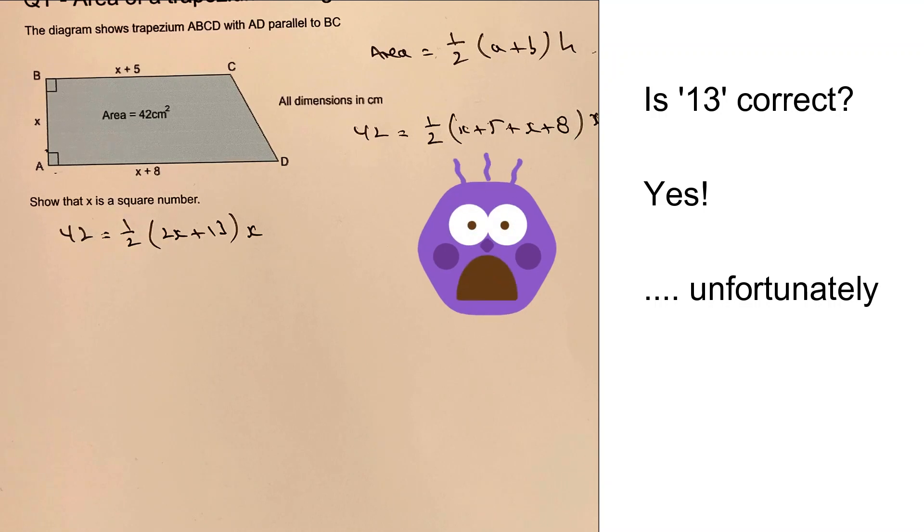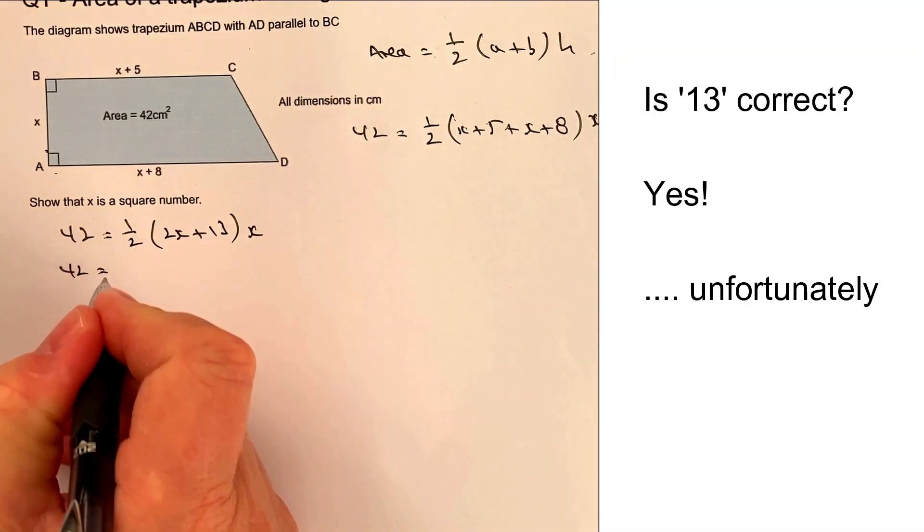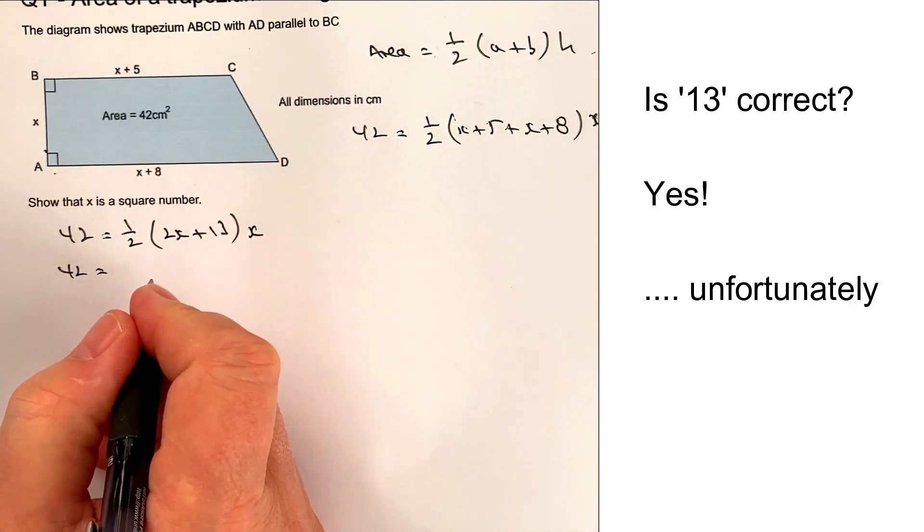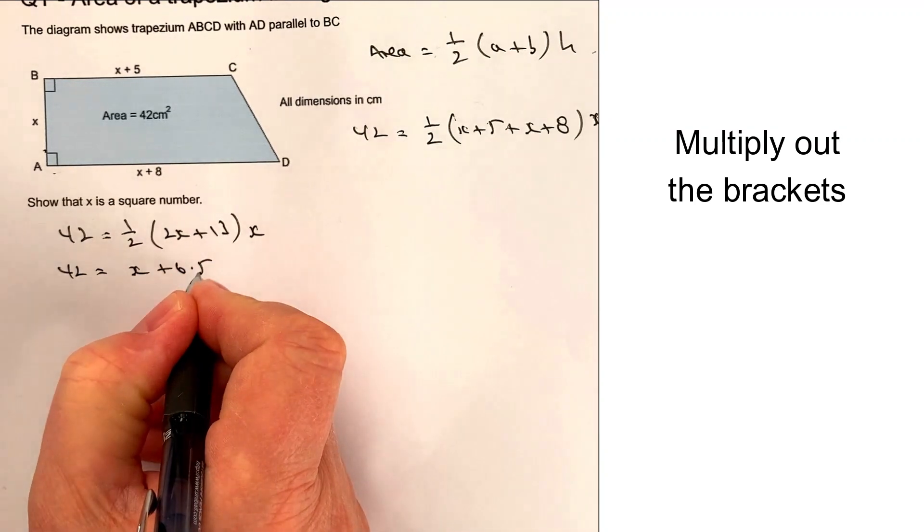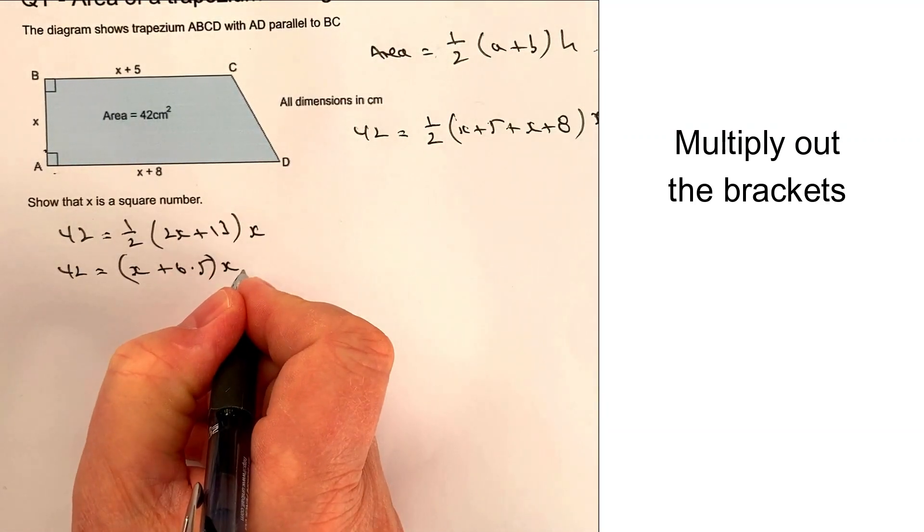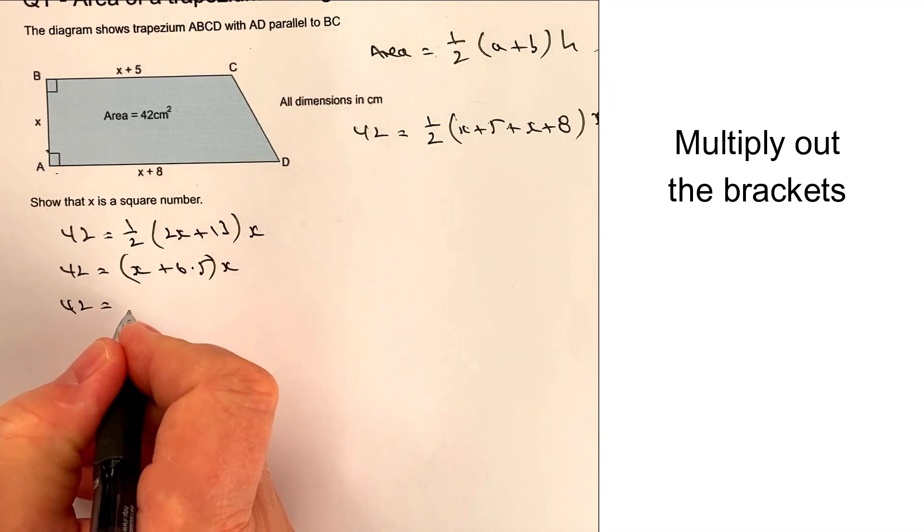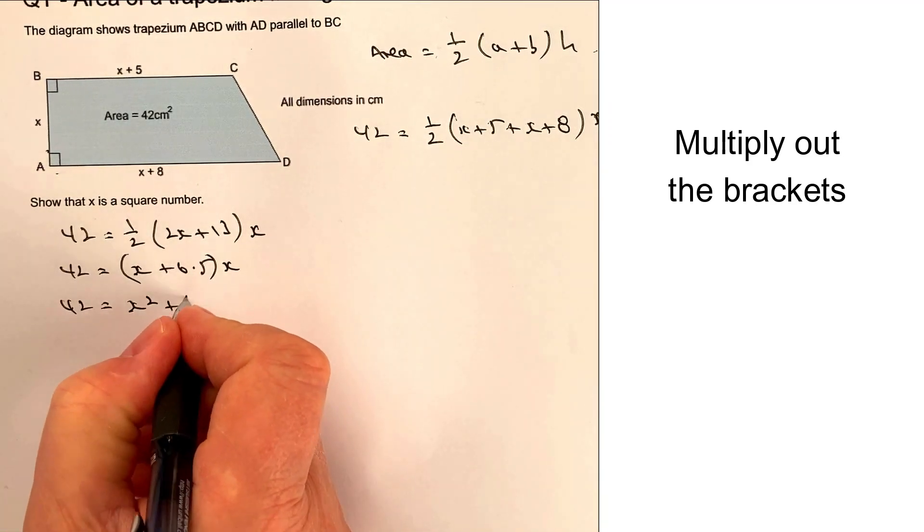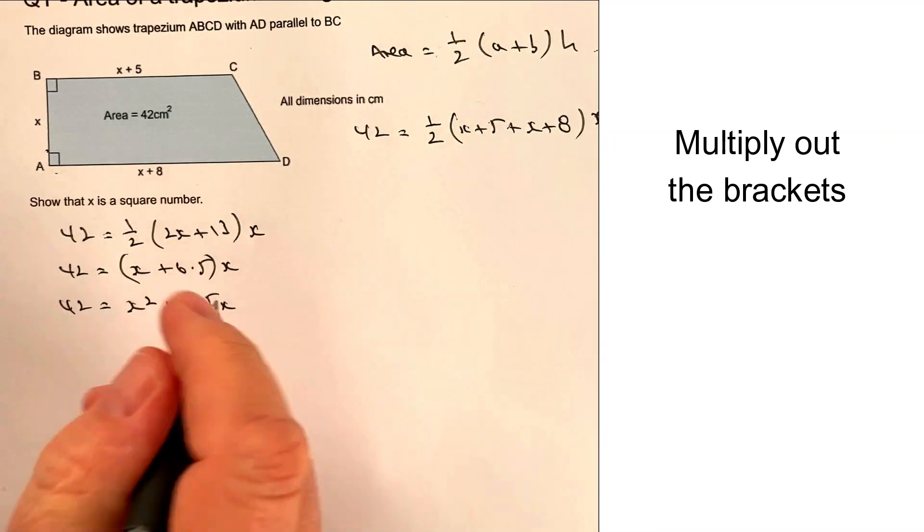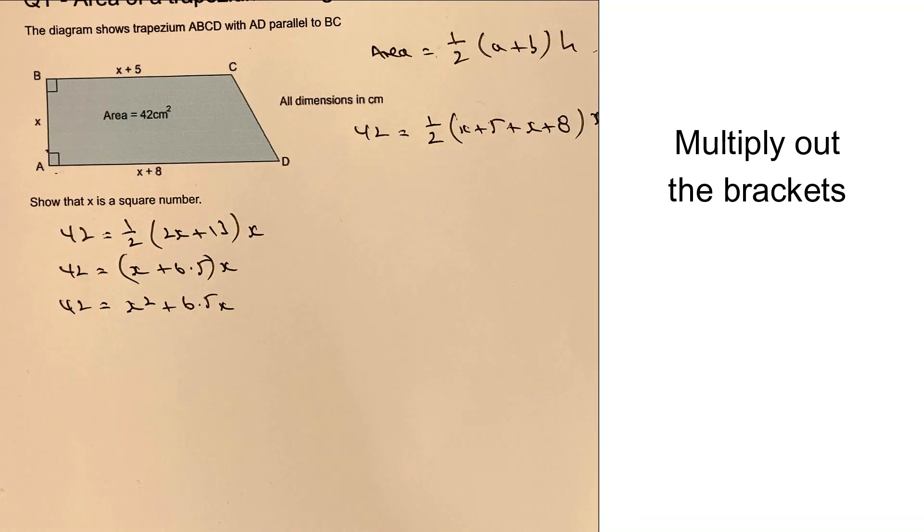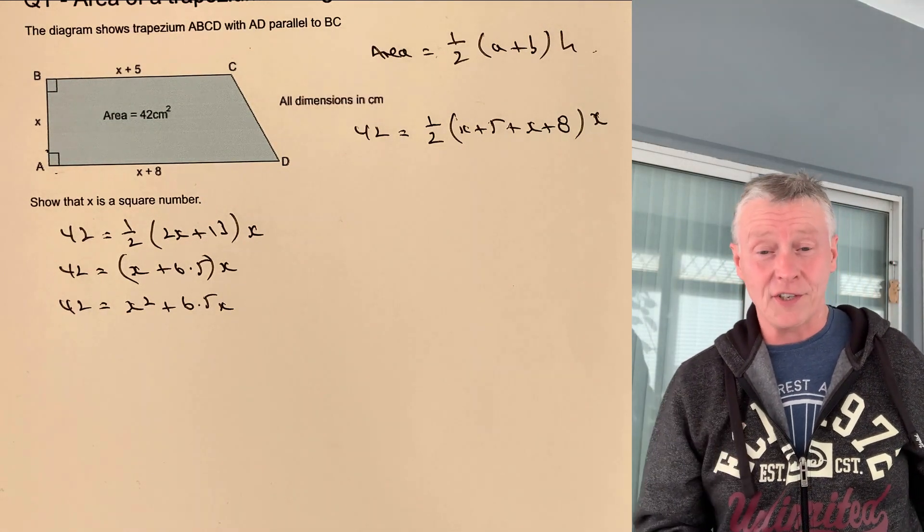All right. So let's try now multiplying out. We're going to get 42 equals a half of 2x. Well, that's easy enough. That's going to be x. Half of 13 is 6.5. And again, that's still in brackets multiplied by x. Okay, so let's now make it look a little bit more like a quadratic equation because if I multiply both of these terms by x, I'm going to get x squared plus 6.5x. And then we're going to make it equal to 0 and then factorize it.